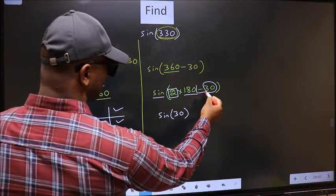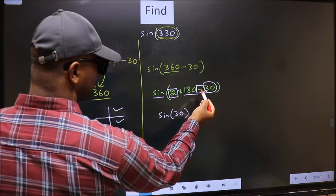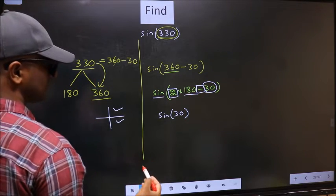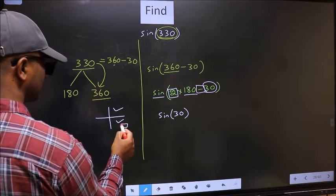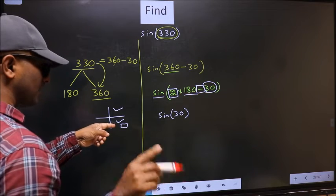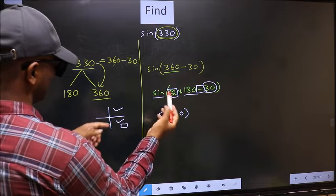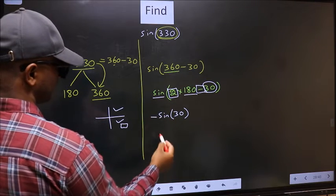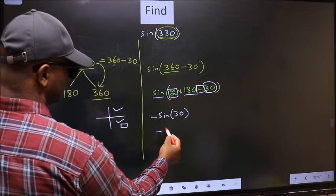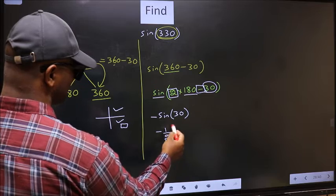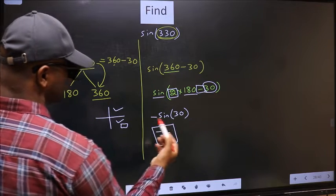we should look at this symbol. Here we have negative. That means the angle lies in the fourth quadrant. And in the fourth quadrant, sin is negative. So we should put negative. So negative sin 30 is 1 by 2. This is our answer.